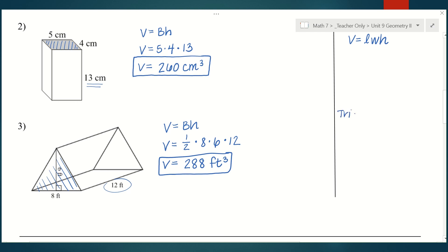This formula is probably brand new to you for a triangular prism. We take one-half times base times height times length — exactly what we just did. That first part is the area of your triangle: one-half base times height. The length is just how long or tall your triangular prism is. Those are the three formulas we're going to practice today.